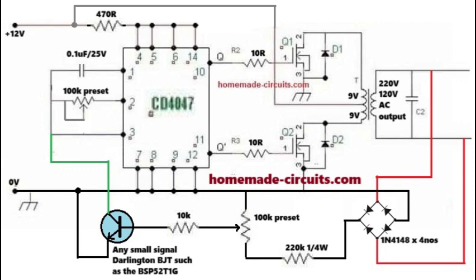When the BJT conducts, it starts grounding the CT pin of the IC4047. Since the RC network associated with the CT and RT pinouts of the IC determines the output frequency and PWM, the grounding of the CT pin instantly causes the output PWM and frequency to nullify, which in turn causes the output AC voltage to dip.